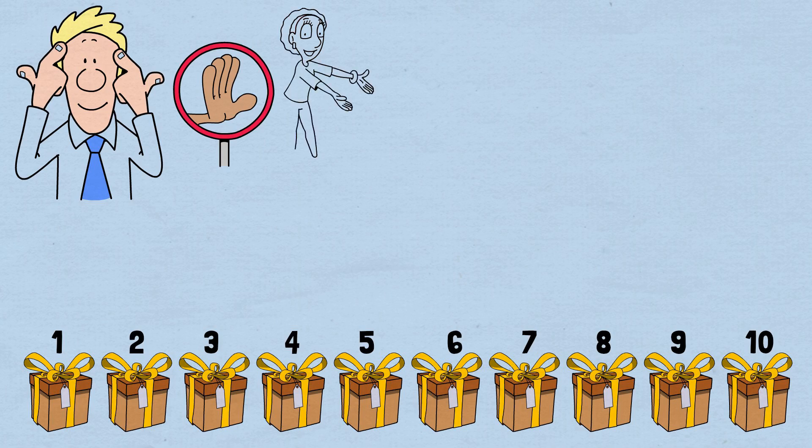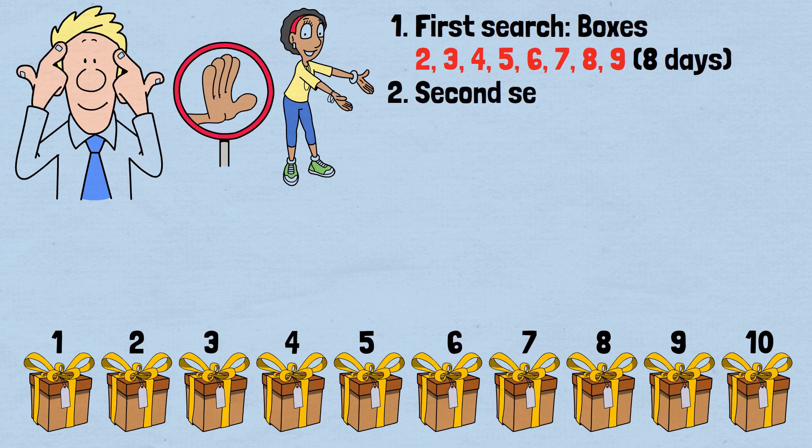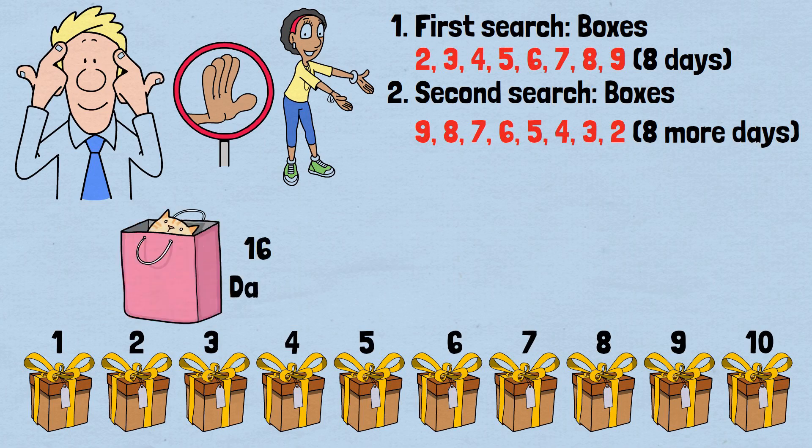Following our general rule for even numbers of boxes: 1. First search: Boxes 2, 3, 4, 5, 6, 7, 8, 9, 8 days. 2. Second search: Boxes 9, 8, 7, 6, 5, 4, 3, 2, 8 more days. This guarantees success within 16 days, regardless of the cat's starting position.